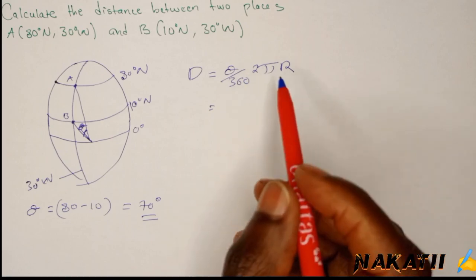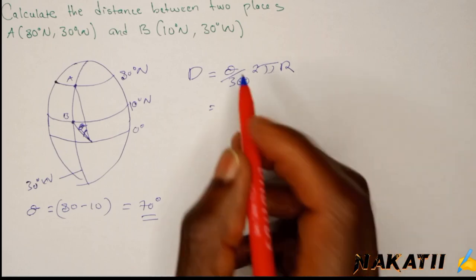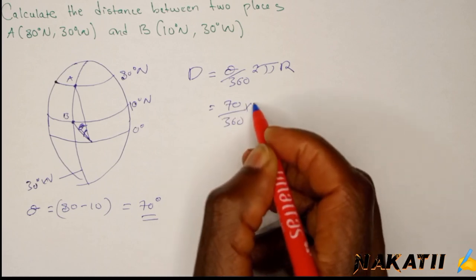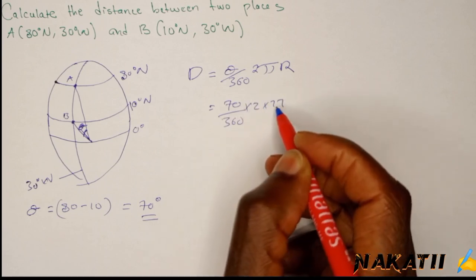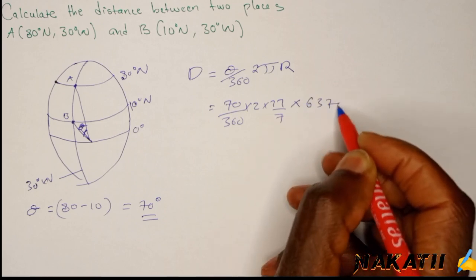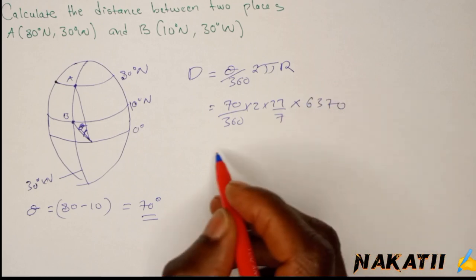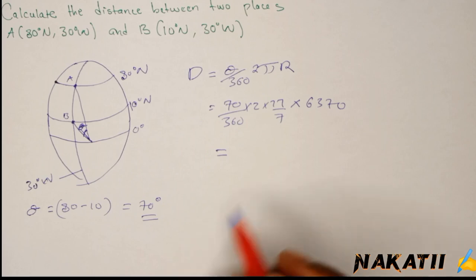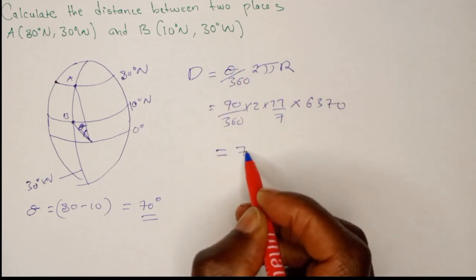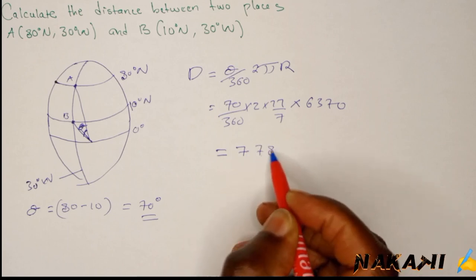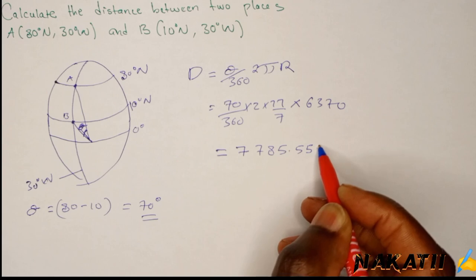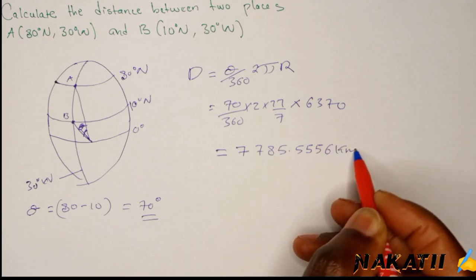Theta is the angle between the two points, so that will be 70 over 360 times 2 times 22 over 7 times 6370. The radius of the earth is always given as 6370. If you punch these values in your calculator, you're going to get 7785.556 kilometers. So we give our answer in kilometers.